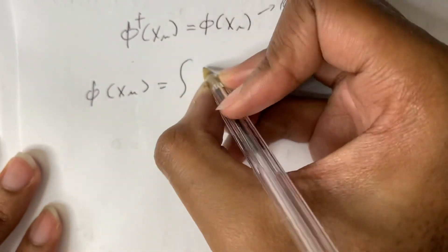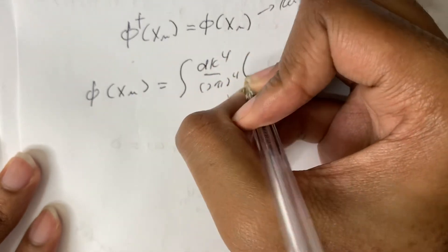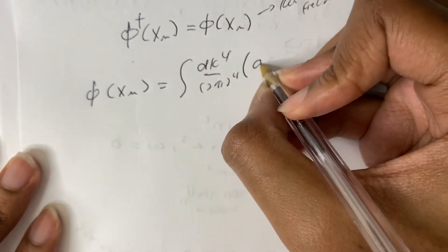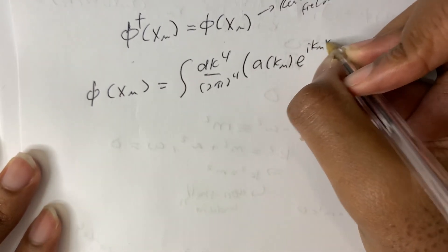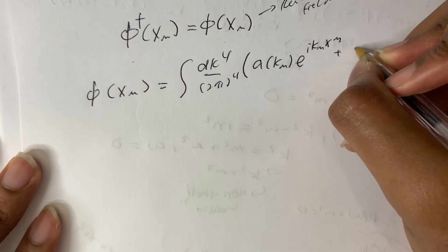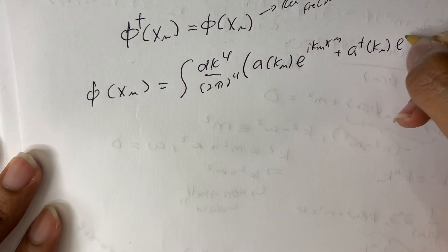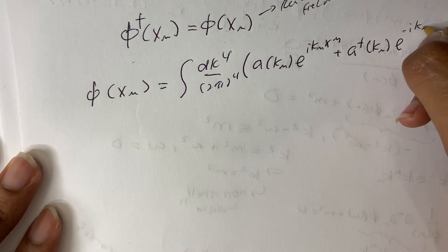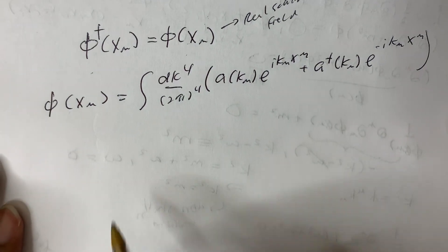So real scalar field will take the form of phi of x mu. So the integral dk to the fourth over two pi to the fourth of a of k mu e to the i k_mu x^mu.